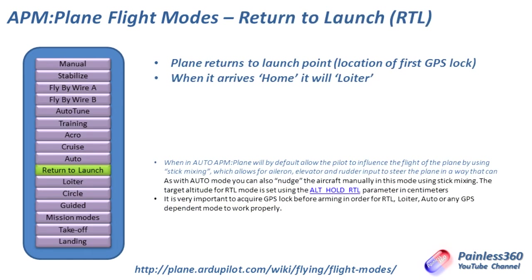Return to launch — same warning applies: make sure you have a GPS lock before doing anything, indicated by a solid blue light on the APM. When you flick it into return to launch, it will bank, turn, and come home. When it arrives at the GPS initial home location it will go into loiter. This is a great mode to set up as your fail safe, so that if something happens with battery voltage or radio signal, the fail safe kicks in and the plane comes back to you.